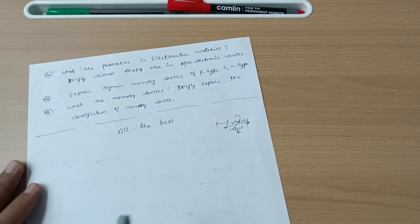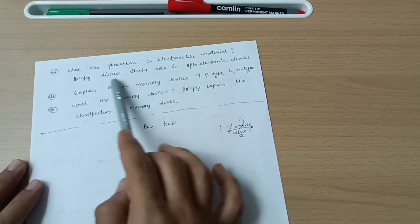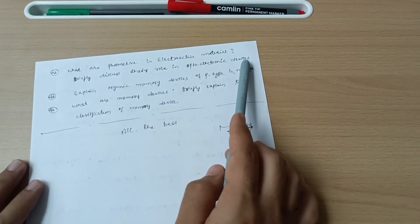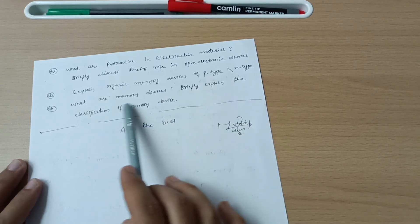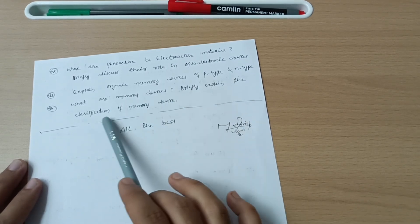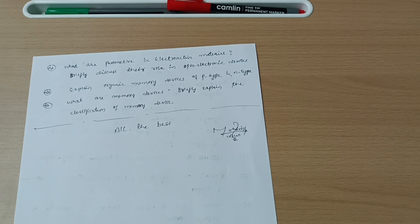And last three questions which are what are photoactive and electroactive materials? Briefly discuss the role of optoelectronic devices. Explain organic memory devices of p-type and n-type. What are memory devices? Briefly explain the classification of memory devices. This much portion if you cover, you can easily pass the chemistry subject, not only pass, you can also score more than 60 marks.